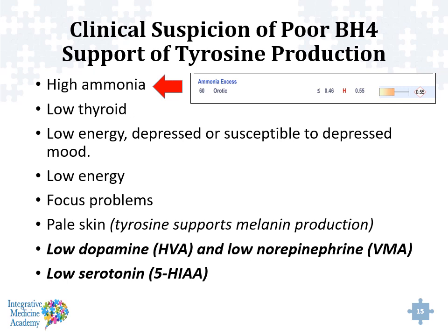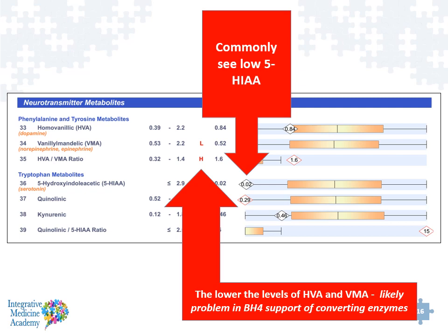There is clinical suspicion for poor BH4 activity if we're seeing things like high ammonia, low thyroid function, low energy, focus problems, pale skin, low dopamine, low norepinephrine, or low serotonin — these can all be measured off the organic acid test in the neurotransmitter section. If we see the metabolite of serotonin low, that could be because of a BH4 deficiency. If we see low levels of homovanillic or vanillylmandelic acid, which are the metabolites of dopamine and norepinephrine respectively, that too could indicate poor BH4 activity.